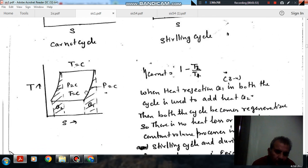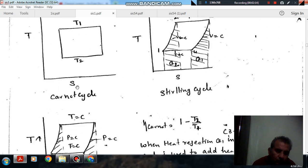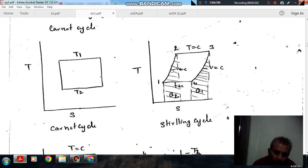Similarly, there is Ericsson cycle also and in the Ericsson cycle there are isothermal constant pressure processes. And all the heat rejected during constant pressure process is supplied to this process. So, overall there is no heat rejection during the process. So, it will be to represent, combinedly it becomes adiabatic processes.